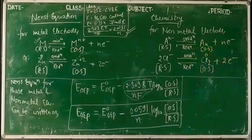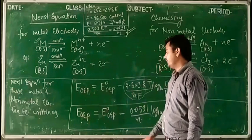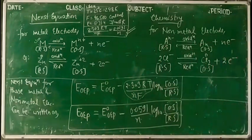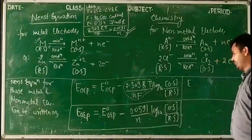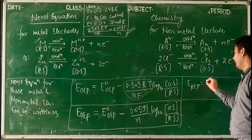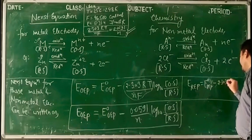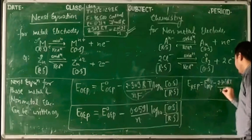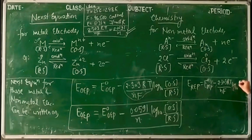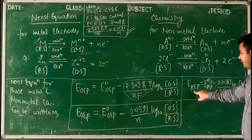Now we can write the Nernst equation in terms of reduction electrode potential. The Nernst equation for reduction electrode potential is: E(REP) = E°(REP) − (2.303RT / nF) × log([oxidized] / [reduced]). This is the Nernst equation in terms of reduction electrode potential.